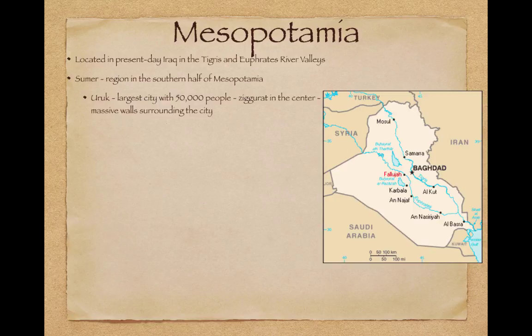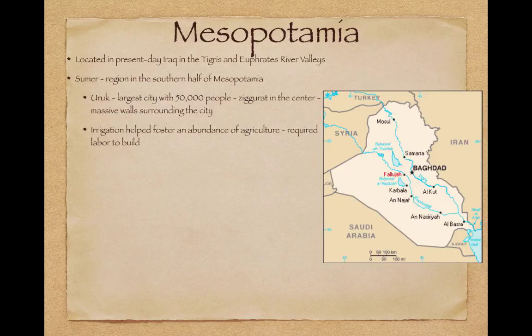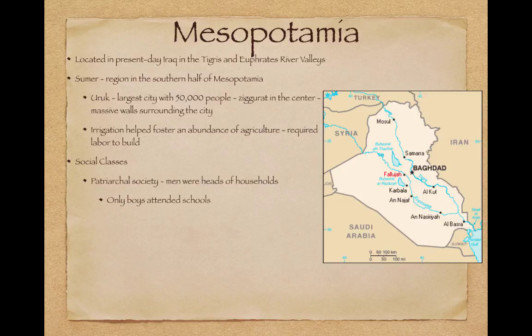There will be a ziggurat in the center and massive walls around the city. A ziggurat is kind of like a pyramid — a large stepped building. Irrigation helped foster an abundance of agriculture, which required labor to build the irrigation systems. There were social classes in Mesopotamia; it's a patriarchal society where men were heads of the household. Only boys attended school in Sumer, and kings and nobles were at the top. Kings were seen as divine.